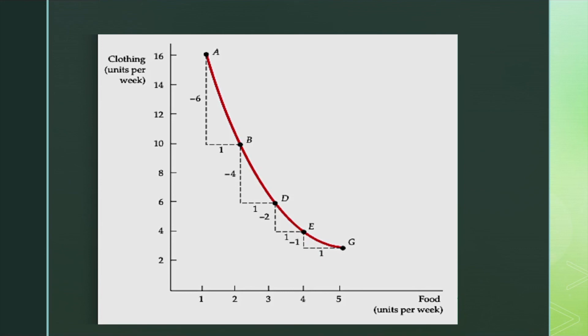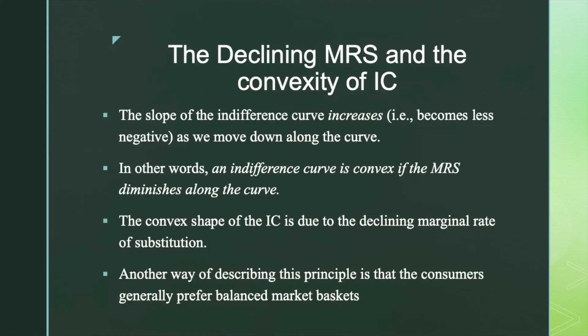Thus, the MRS also falls. As more and more of one good is consumed, we can expect that a consumer will prefer to give up fewer and fewer units of a second good to get additional units of the first one. This is the reason for the convex shape of the IC — it is due to the declining marginal rate of substitution. As we move down the indifference curve and as the consumption of food increases, the additional satisfaction a consumer gets from more food will diminish. Thus, he will give up less and less clothing to obtain additional food. Consumers generally prefer balanced market baskets — a basket containing all of the goods — to market baskets that contain all of one good and none of another.